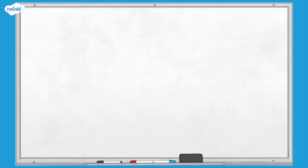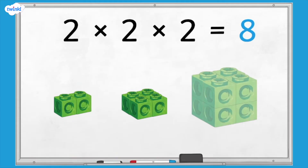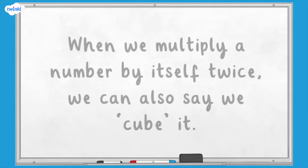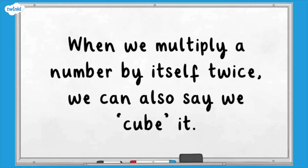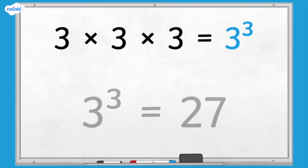Another example of a cube number is 8, which is 2 multiplied by 2 multiplied by 2. When we multiply a number by itself twice, we can also say we cube it. 3 times 3 times 3 is 3 cubed. We use this mathematical notation when cubing numbers. We could write our original number statement as 3 cubed equals 27.